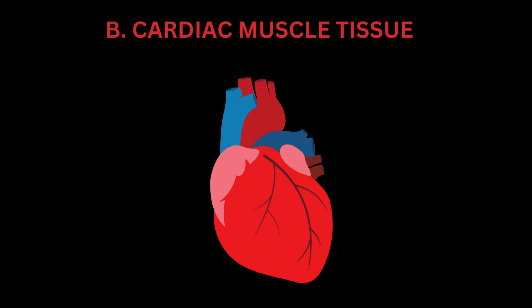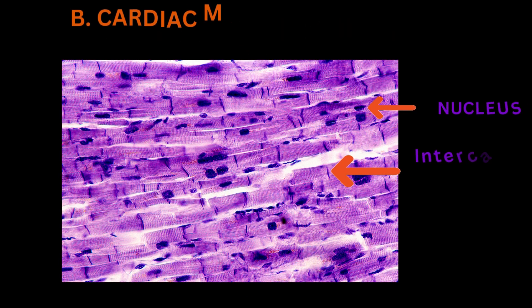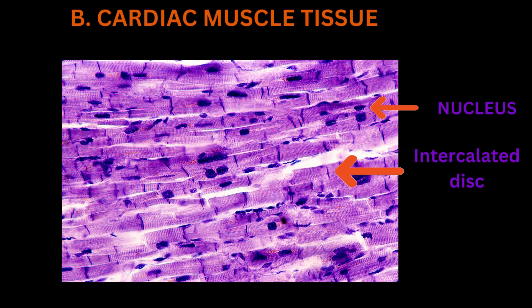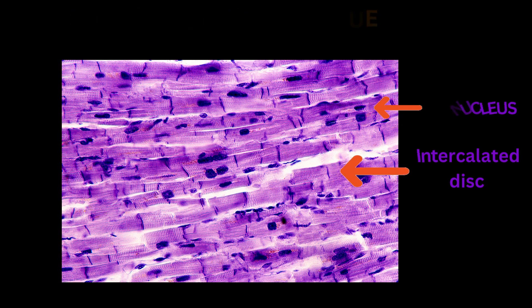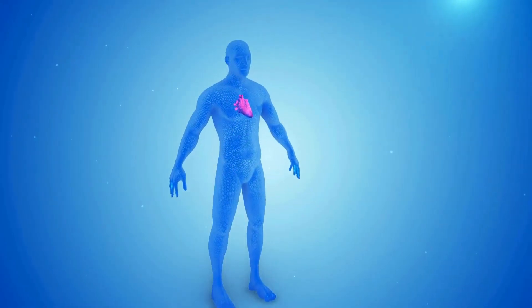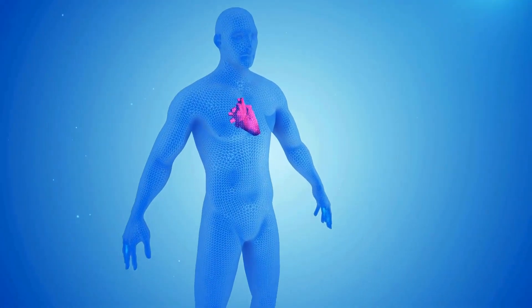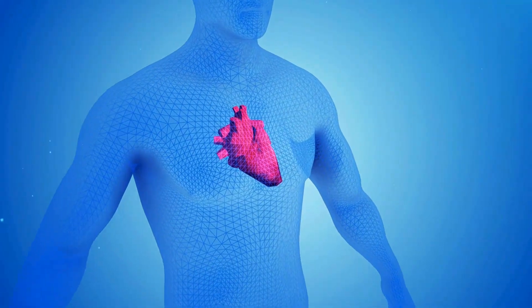Cardiac muscle also has a striated appearance with branching fibers. It is found in the heart, is involuntary, and contracts rhythmically to pump blood. Cardiac muscle contains intercalated discs, allowing for coordinated contractions, and is typically uninucleated, containing a single nucleus per cell.